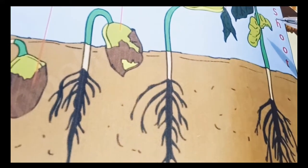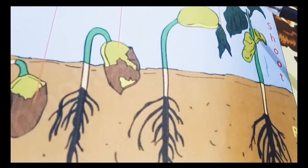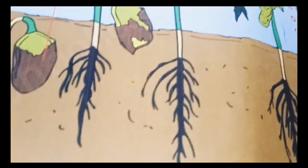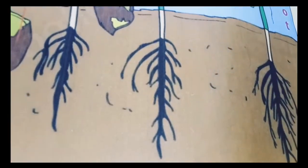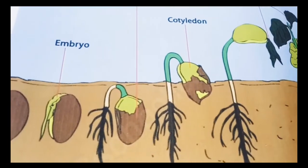Okay, so this shoot, it always grows upward towards the sunlight and the roots they grow downwards towards the gravity. And this whole process is called germination.